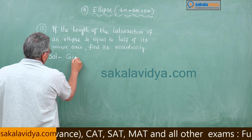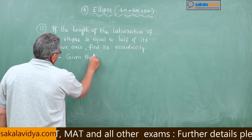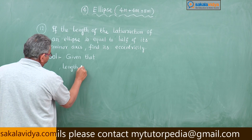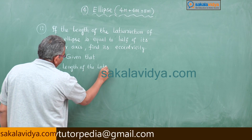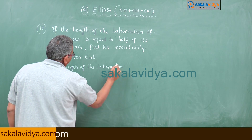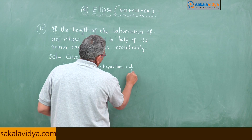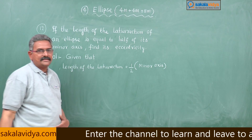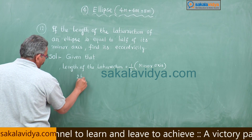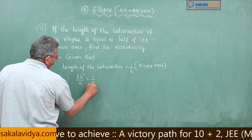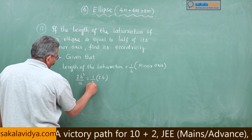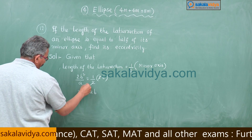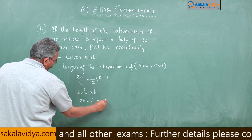Given that the length of the latus rectum equals half times the minor axis. The length of the latus rectum is 2b²/a, and this equals (1/2)·2b. The 2's cancel, so 2b²/a = b. Cross-multiplying and cancelling b, we get 2b = a. Call this equation 1.